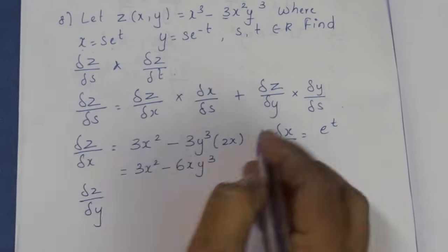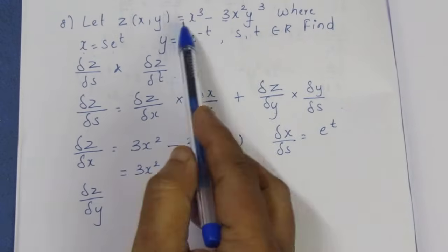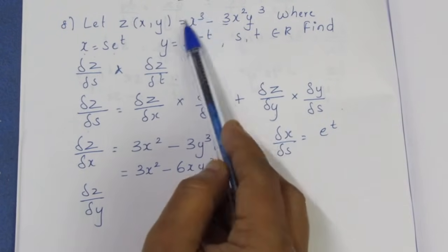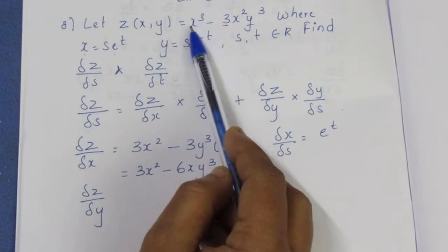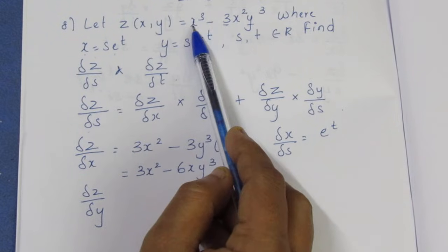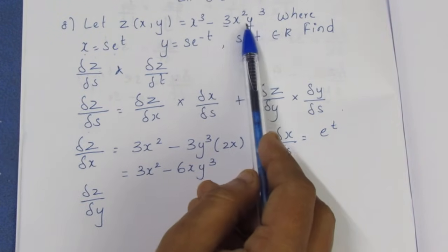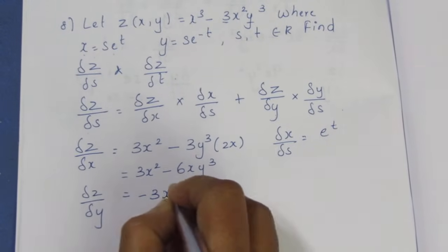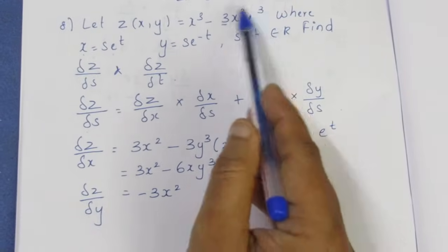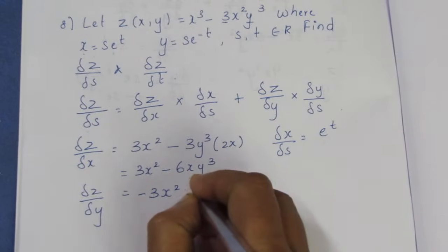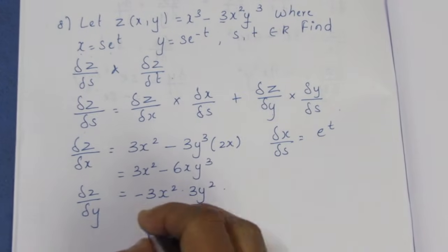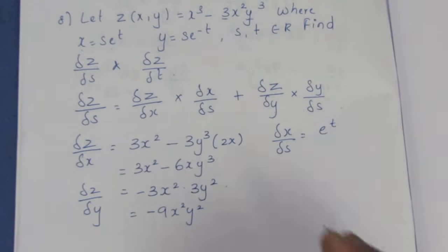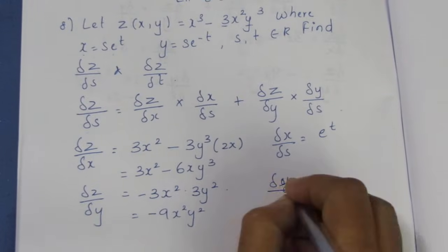Next, we find ∂z/∂y by differentiating z with respect to y. The x³ term is constant with respect to y, giving zero. For -3x²y³, we treat x as constant and differentiate y³ with respect to y, giving 3y², so ∂z/∂y = -9x²y².